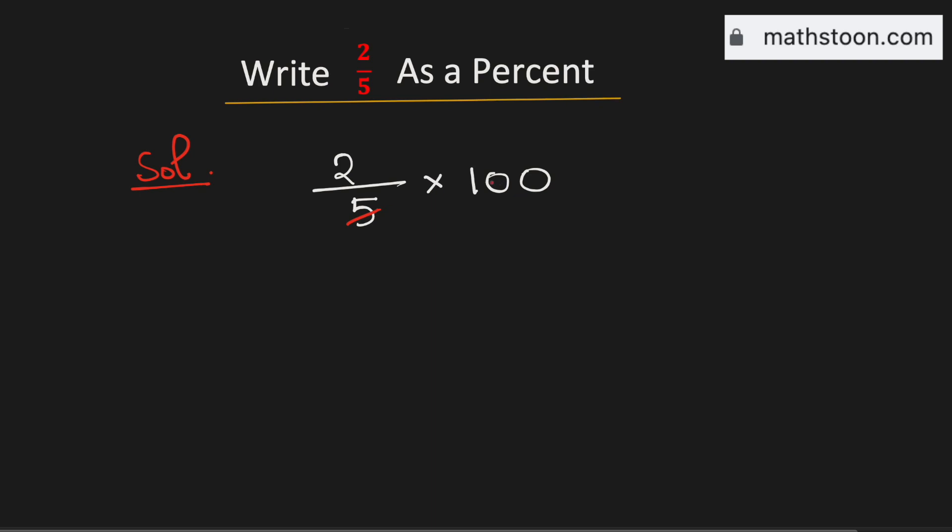We know that 5 goes into 100 by 20, and there is 1 extra 0, so this will be equal to 20.